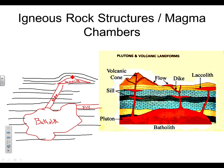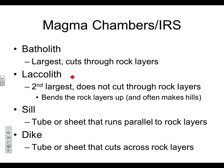Now flip to the front and get your definitions written down — I've put the characteristics on the next slide. The batholith is the largest magma chamber and it cuts through the rock layers. The laccolith is the second largest; it does not cut through rock layers but bends them up and forms hills. The sill is a tube or sheet that runs parallel to the rock layers, and the dike is a tube or sheet that cuts across the rock layers.